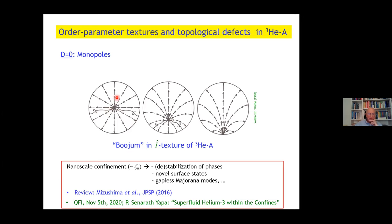You may wonder what happens if this container gets smaller and reaches the coherence length, nanoscale confinement. That's a very active field of research. It stabilizes phases and destabilizes others, leads to new surface states, Majorana modes. There's a review by Mizushima in the Japanese Physical Journal. In this seminar on November 5th, Dr. Yapa gave a very nice talk, Superfluid Helium-3 Within Confines, where he discussed the role of confinement. If you want to see that, go back to YouTube.